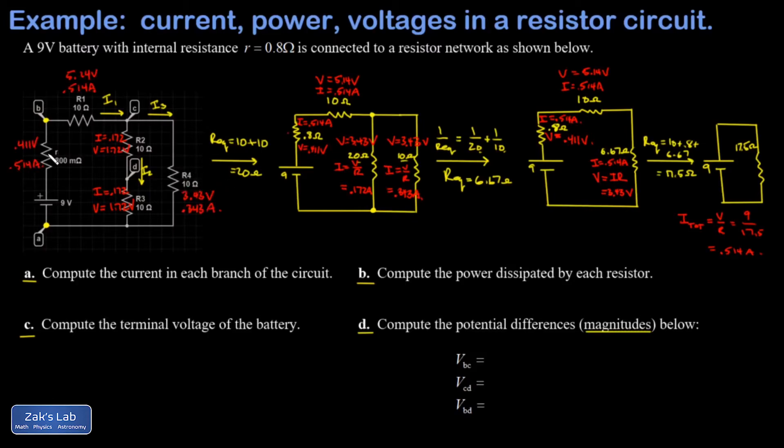Okay, so at this point I can declare that the circuit has been completely solved because we know all the details about every single resistor. And then we can apply that knowledge to answer any questions that were given about the circuit. So part A said to compute the current in each branch of the circuit. So all of these have been done already. I1 is 0.514 amps.